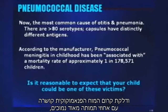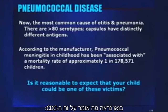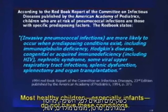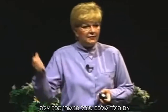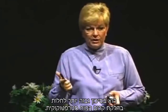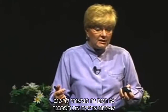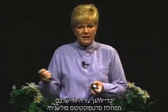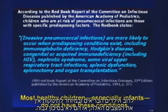There are more than 80 different kinds of those, and pneumococcal meningitis has been associated with a really low rate of mortality. Is it reasonable to expect your child could be one of these victims? The CDC says invasive pneumococcal infections are more likely to occur when predisposing conditions exist: immune deficiency, cancer, congenital abnormalities, HIV, serious viral respiratory infections, spleen dysfunction, no spleen, or organ transplants. If your kids have any of those, they're at higher risk of strep meningitis. If they don't have those conditions, they're pretty low risk. Most healthy kids, especially infants, don't have those conditions.